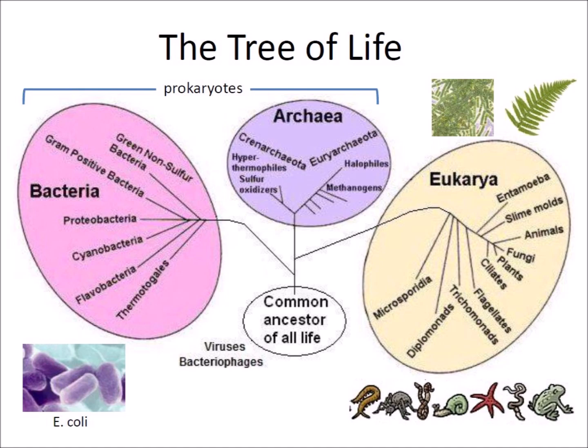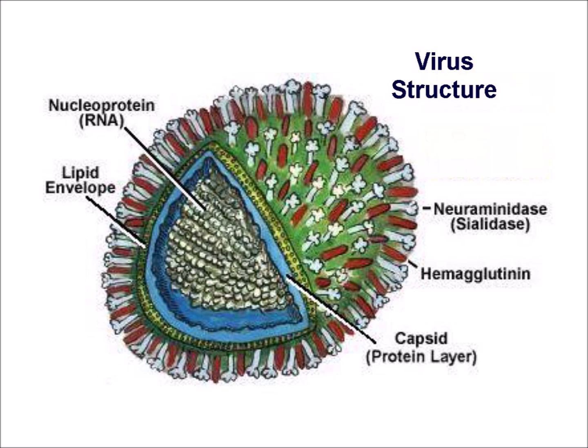Viruses are composed of proteins that encapsulate a DNA or RNA genome. These infectious agents replicate only inside the living cells of other organisms and are not included in the Tree of Life. Viruses do not have the ability to reproduce independently. They are thought to be descendants of the diverse chemical entities that developed in the primordial soup that gave rise to life on Earth. The spikes of neuraminidase and hemagglutinin on the surface of a virus enable it to penetrate cell walls to start an infection.